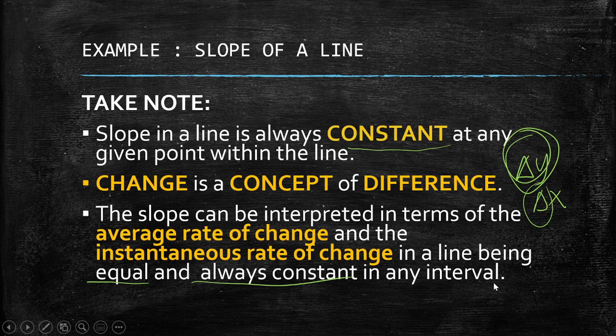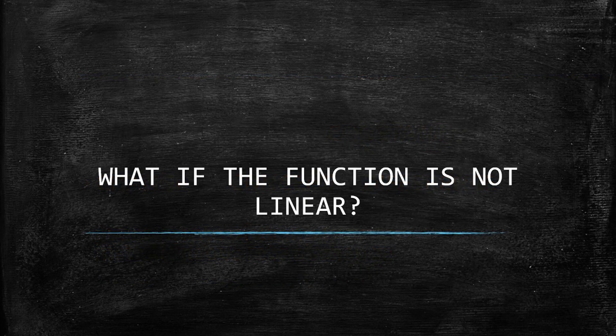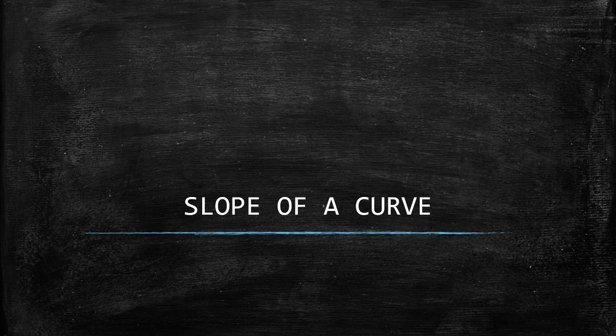These are the properties of the slope for a linear function. Now the question is: what if the function is not linear? What happens to the slope of a curve, and how can we find the slope of a curve at a given point? We will discuss the slope of a curve at a certain point in the next video.